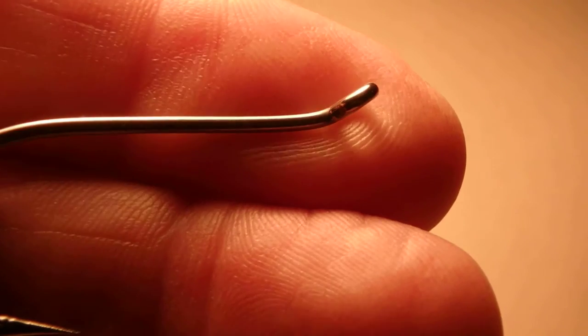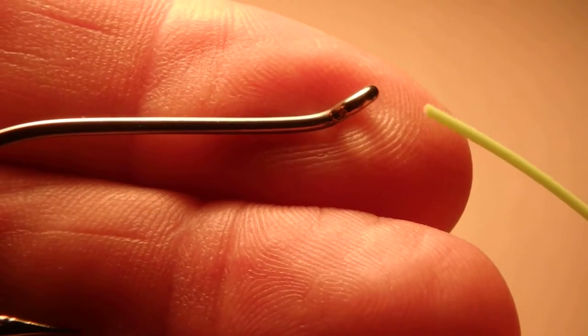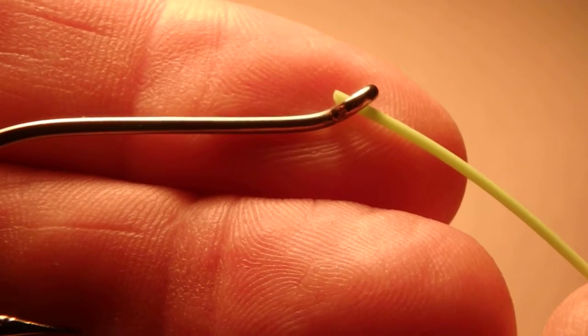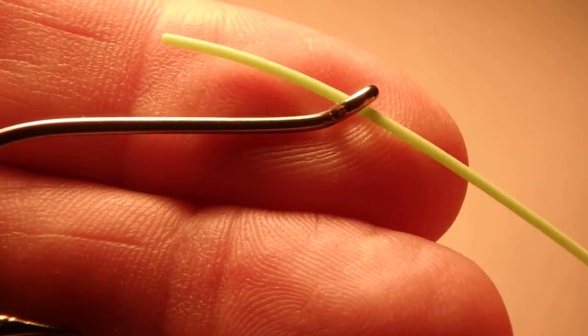So here we go. I use 20 pound Maxima to make my snell. In this demonstration I'll use an old piece of 6 weight fly line. Cut about 10 inches of material.